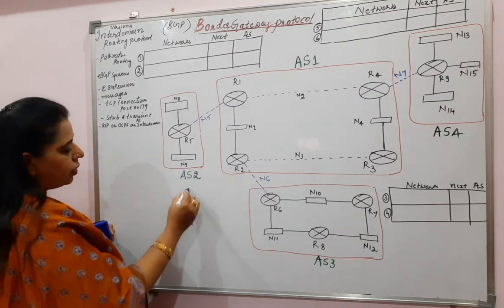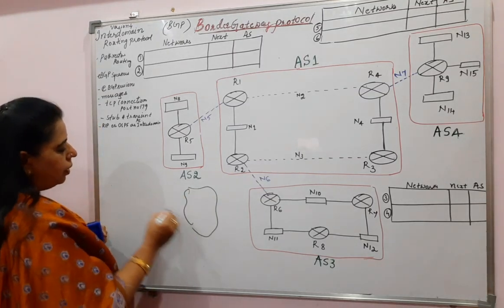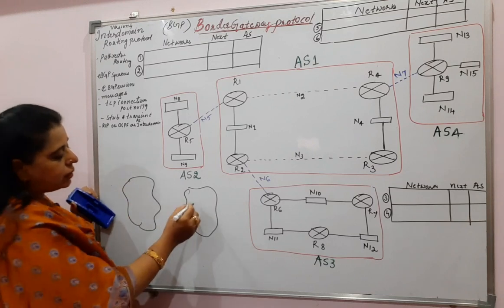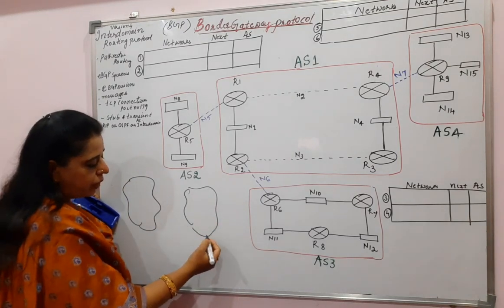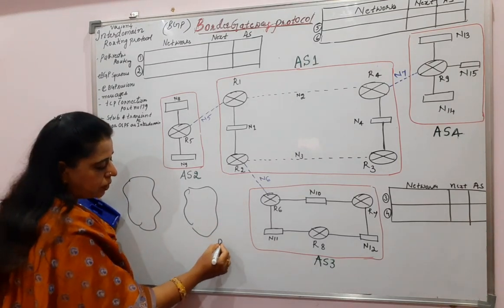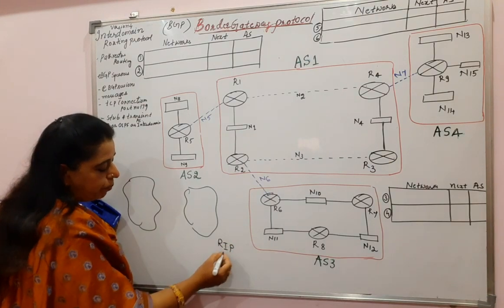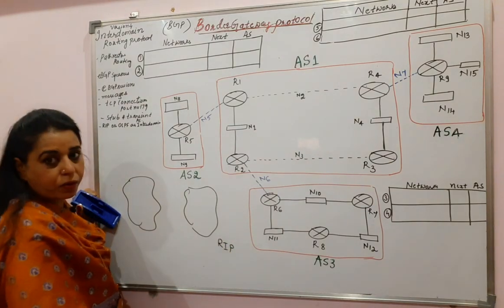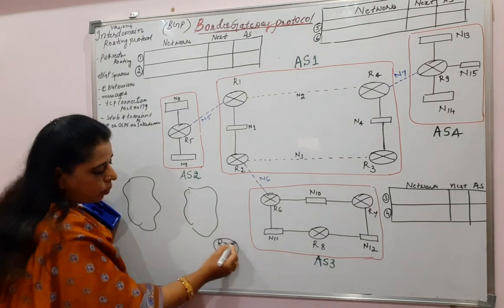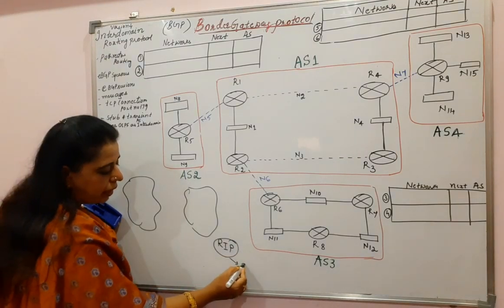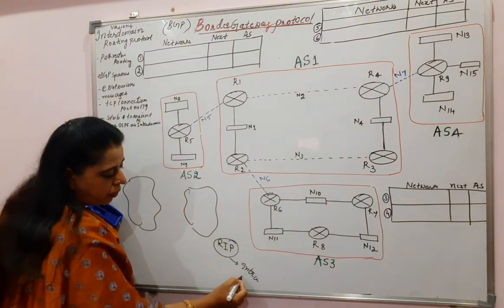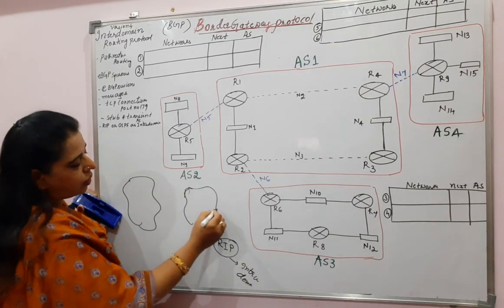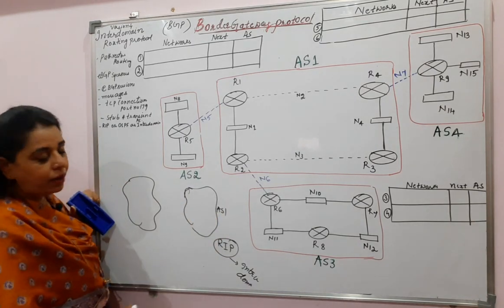Let us take this as one autonomous system and this as another autonomous system. In the previous topics on unicast routing protocols, you studied RIP — a protocol based on the distance vector routing algorithm. That is an intra-domain protocol.